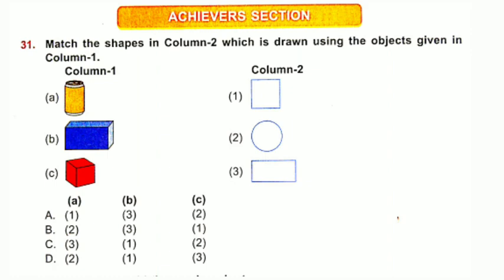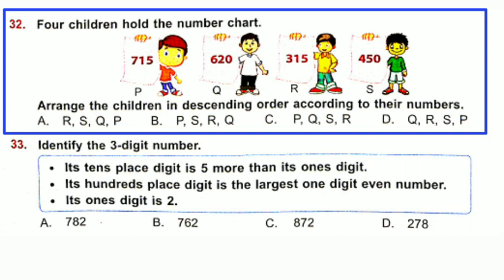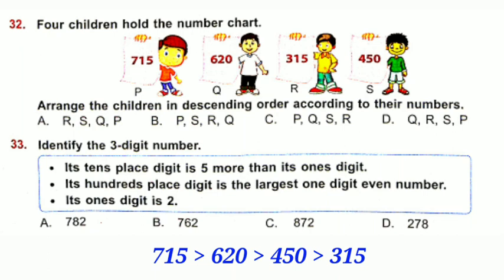Achiever's Section. Question number 31: Match the shapes in column 2 drawn using objects in column 1. A is a cylinder — both top and bottom faces are circular, so A matches with 2. B is a cuboid — top and bottom faces are rectangular, so B matches with 3. C is a cube — all faces are square, so C matches with 1. Option B is correct. Question number 32: Four children hold number charts — P: 715, U: 620, R: 315, S: 450. Arrange in descending order. Descending: 715, 620, 450, 315. So order is P, U, S, R. Option C is correct.